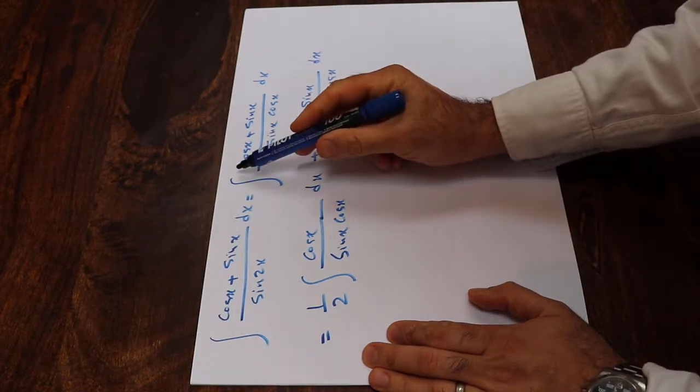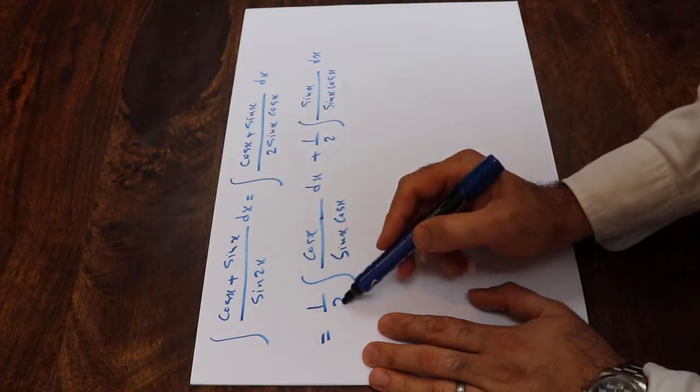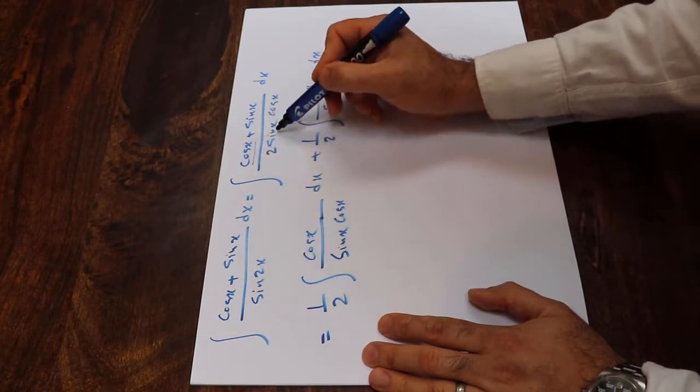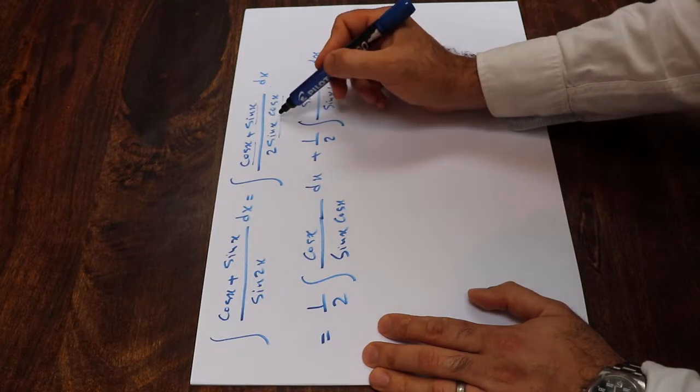All I did here, basically 1 divided by 2 is constant, so I took it out of the integral and then I divide this term by this one plus this term by this one.